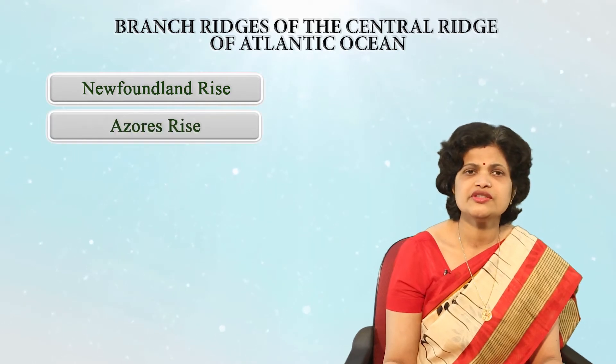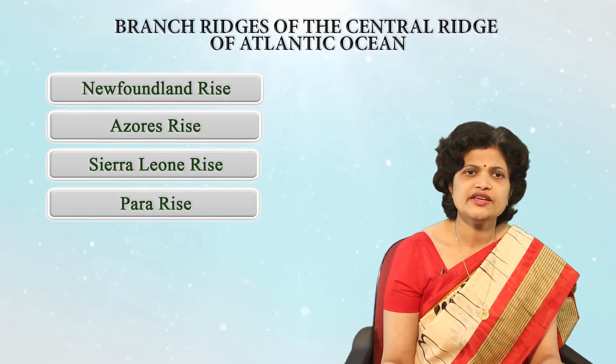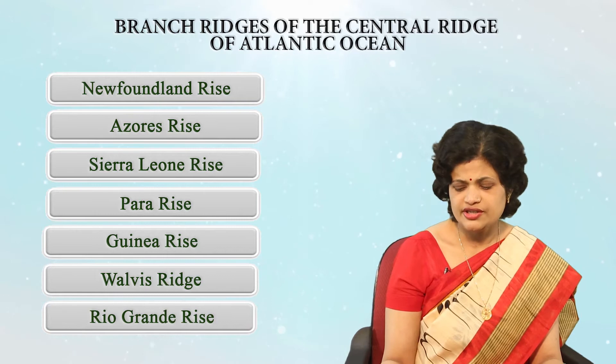The branch ridges include: Newfoundland Rise, Azores Ridge, Sierra Leone Rise, Pará Rise, Guinea Rise, Walvis Ridge, and Rio Grande Rise. You may note that at some places I say 'rise' and at others 'ridge.' The difference is that ridges have greater height compared to rises, though both are associated with diverging plates. Mid-oceanic rises and ridges are similar in origin. The continental rise, however, is a huge depositional zone at the bottom of the continental slope where it merges with the deep sea plain — so you should differentiate between continental rise, mid-oceanic ridge, and mid-oceanic rise.